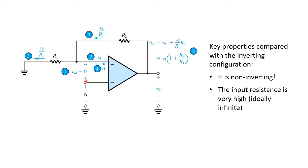Since the positive input terminal is at a voltage Vi, we therefore know in step two that the negative op-amp input terminal must also be at a voltage Vi. Therefore, the voltage across resistor R1 is Vi. This allows us to find the current through resistor R1, equal to the voltage across the resistor divided by the resistance value. That's step three.